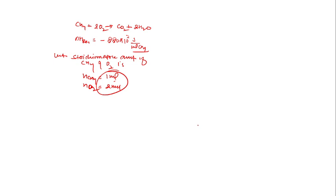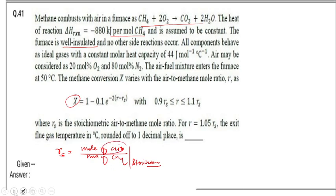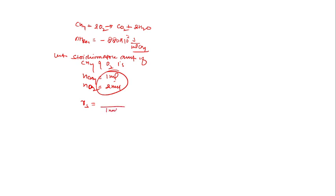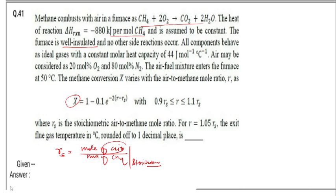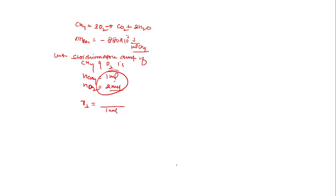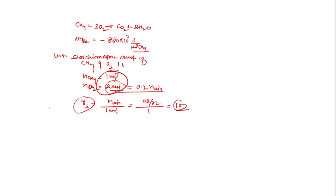Rs is the ratio of moles of air to moles of methane. Moles of methane is 1 mole. Since air is 20 mole percent oxygen, the moles of oxygen (2 moles) represent 20% of the moles of air. So moles of air = 2 / 0.2 = 10. Therefore Rs = 10.